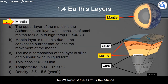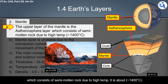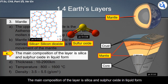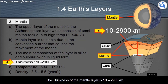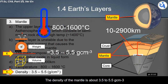The second layer of the Earth is the mantle. The upper part of the mantle is called the asthenosphere, which consists of semi-molten rock at about 1,400°C. The mantle layer is unstable due to convection currents that cause movement within it. Its main composition is silica and sulfur oxide in liquid form. The mantle is about 10 to 2,900 kilometers thick, with temperatures of 800 to 1,600°C and a density of 3.5 to 5.5 g/cm³.